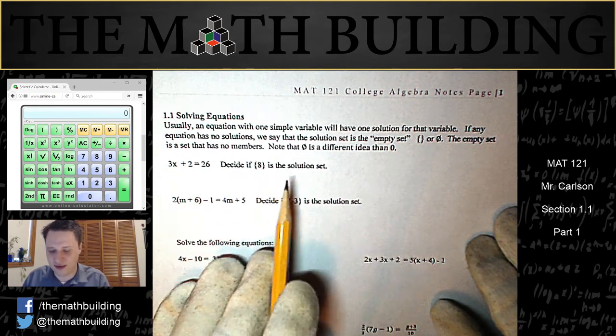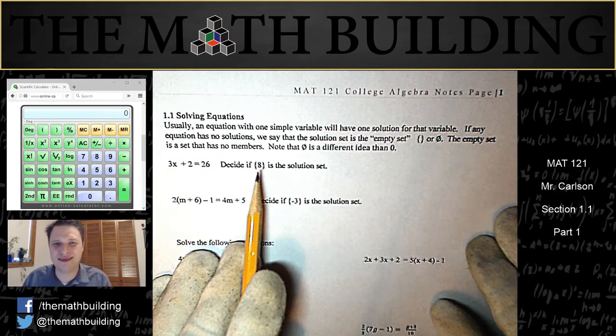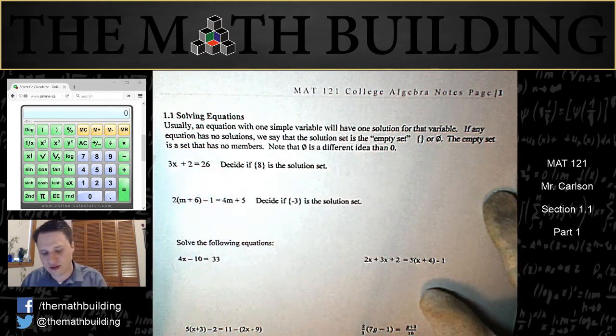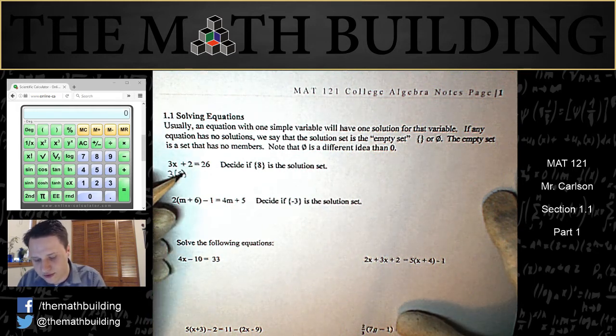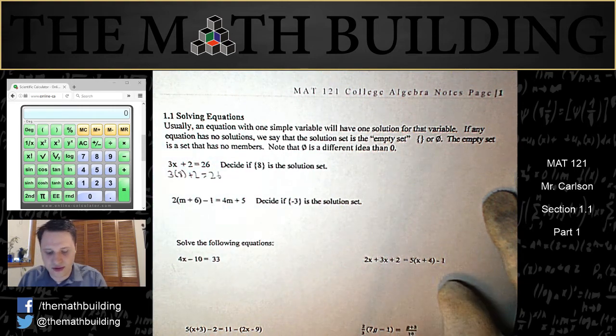Here it says, decide if 8 is the solution set. These curly brackets mean a collection of objects, or a set. Let's find out if it's the solution. We do that by just plugging in the number, or substituting the number, just like this. 3 times 8 plus 2, and I'm going to put a question mark above the equal sign because we don't know if they're equal or not.